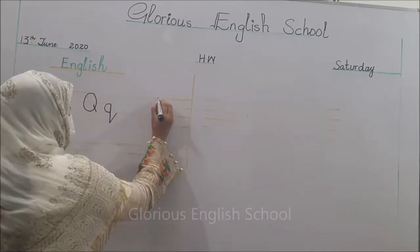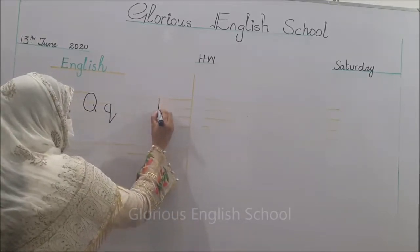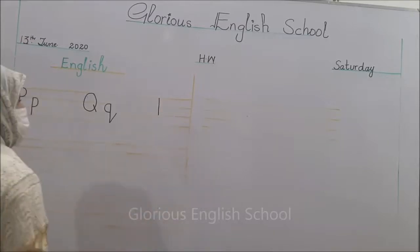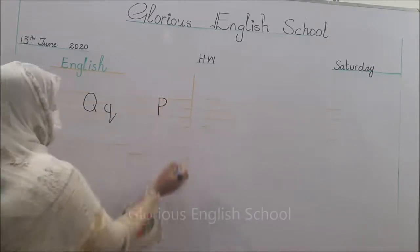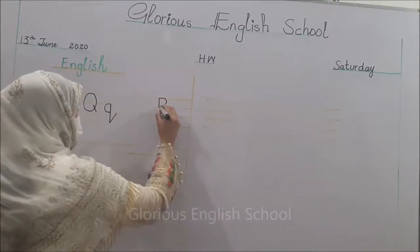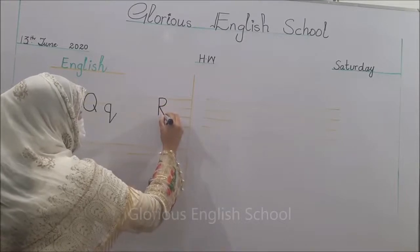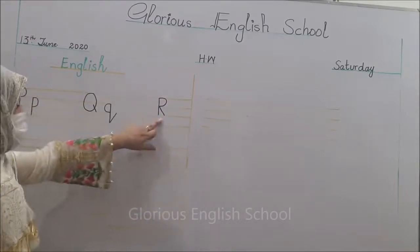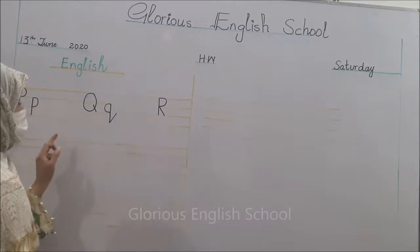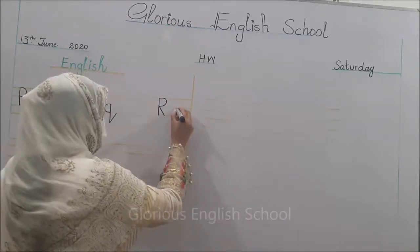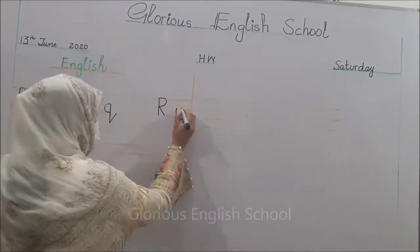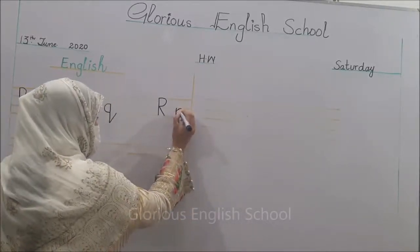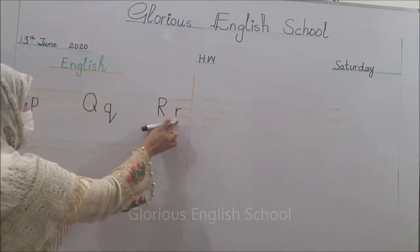Next is R. Standing line, make a curve, small slanting line - यह बन जाता है capital R। Small r के लिए mid की two lines में पहले standing line लगाएंगे और फिर short curve बना देंगे तो यह बन जाएगा small r।